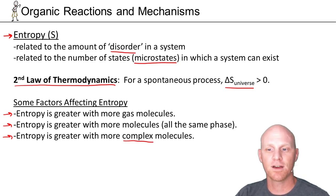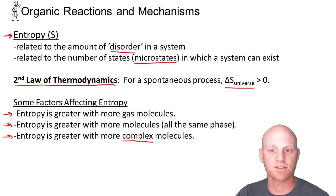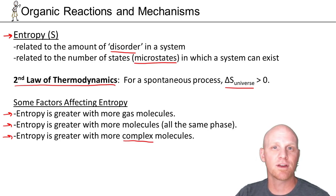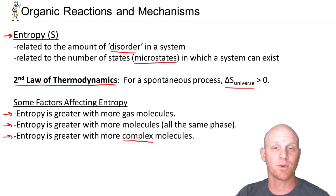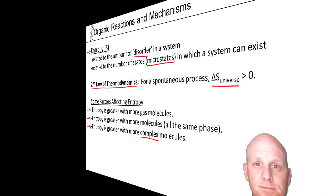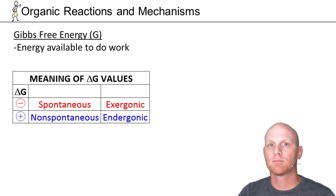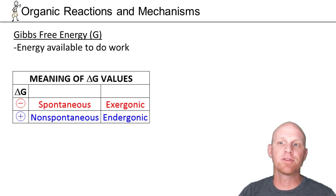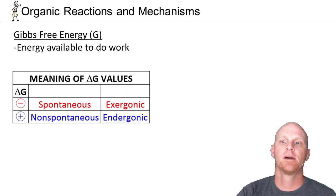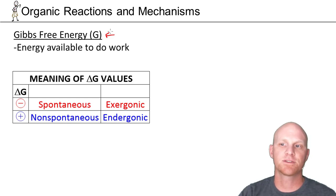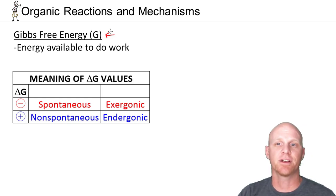Again, this is not an exhaustive list — there are many other factors that affect entropy, just none that are really important to the discussion here for organic reactions. Now that we've talked about both enthalpy and entropy, we need to talk about Gibbs free energy, symbolized with the letter G.